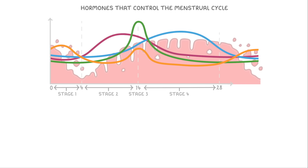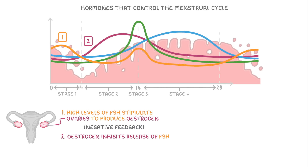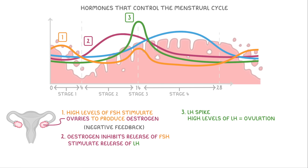Let's now see how all four of these hormones interact with each other during the menstrual cycle. At the very start of the cycle, the high levels of FSH stimulate the ovaries to produce oestrogen. As oestrogen levels start to increase, oestrogen inhibits the release of FSH, so FSH levels decrease — which is an example of negative feedback. The higher levels of oestrogen also stimulate the release of LH, causing this LH spike, and it's these higher levels of LH that result in ovulation.